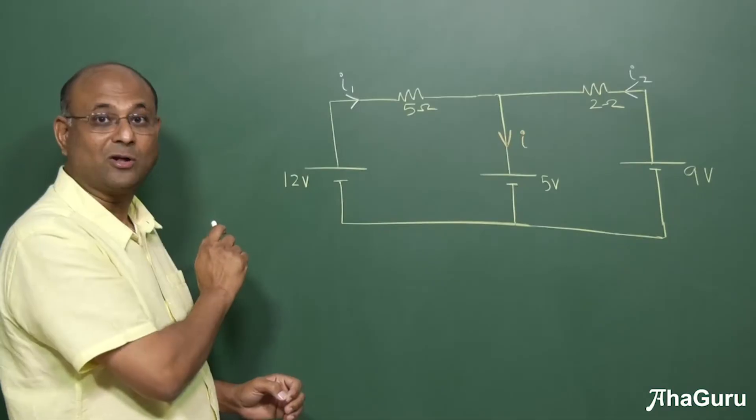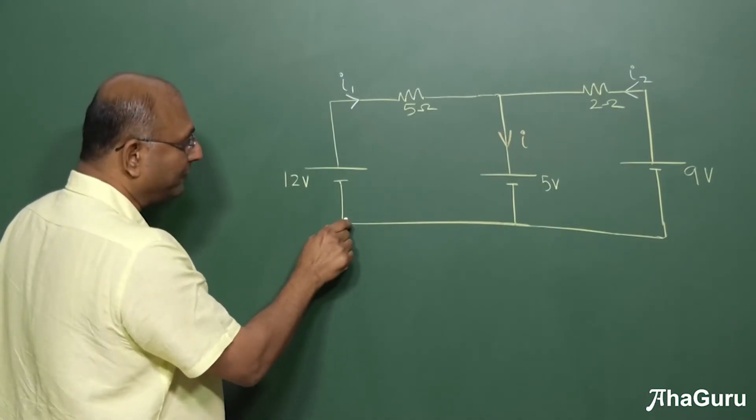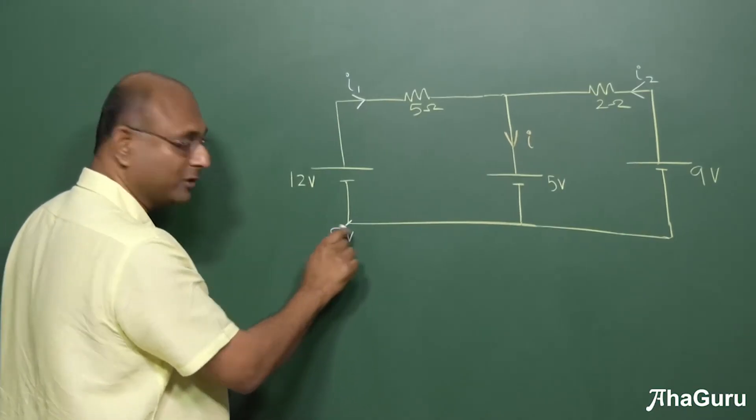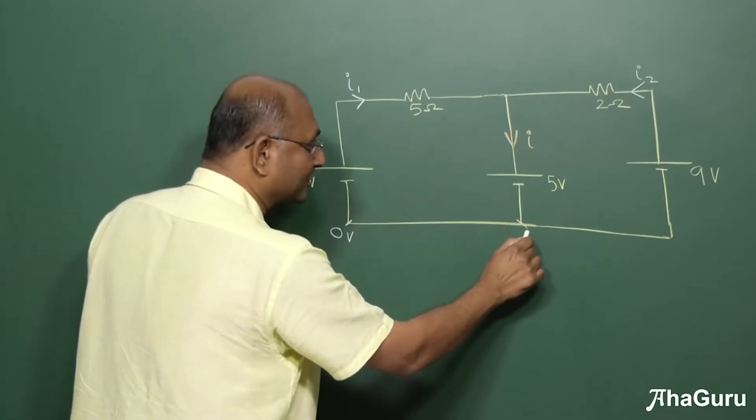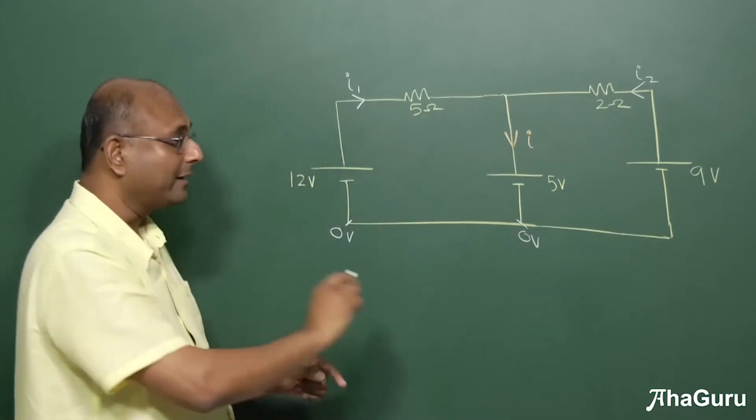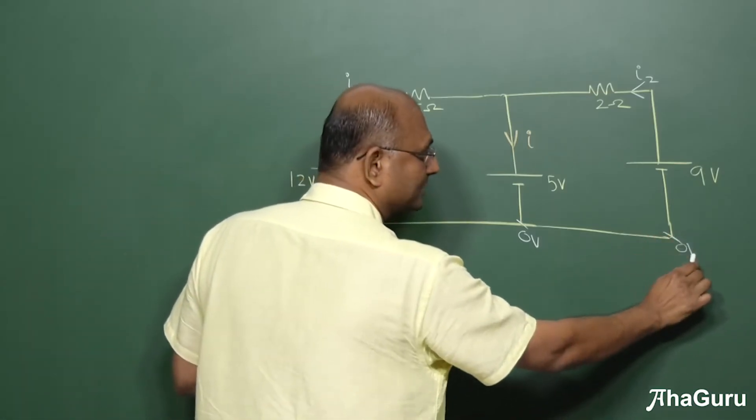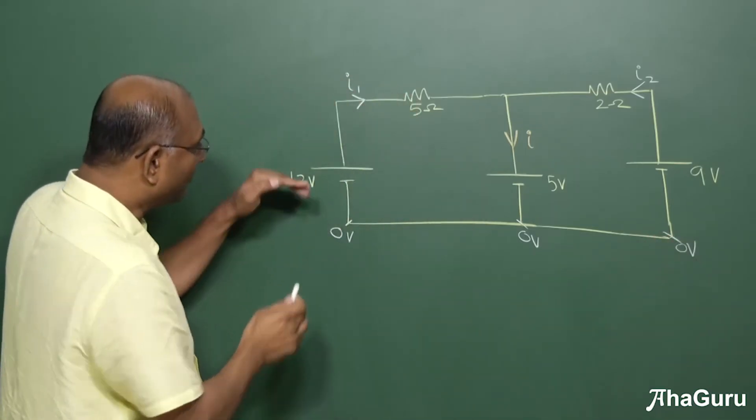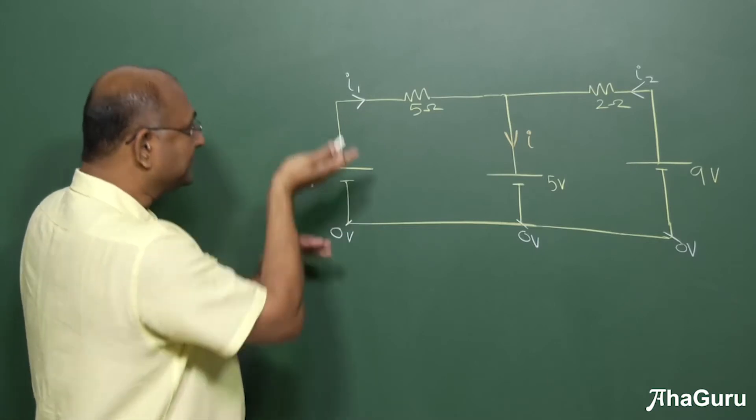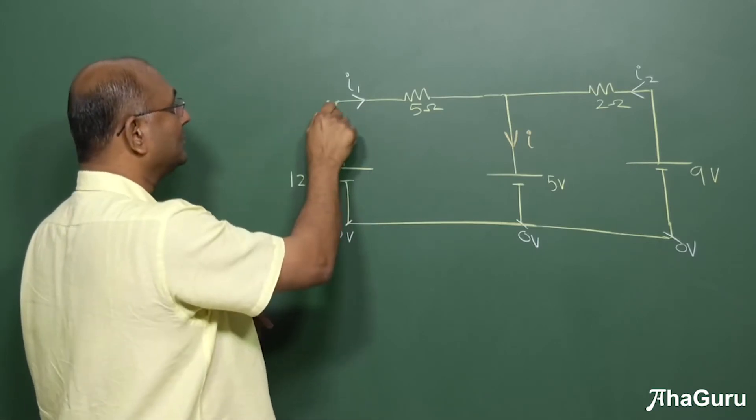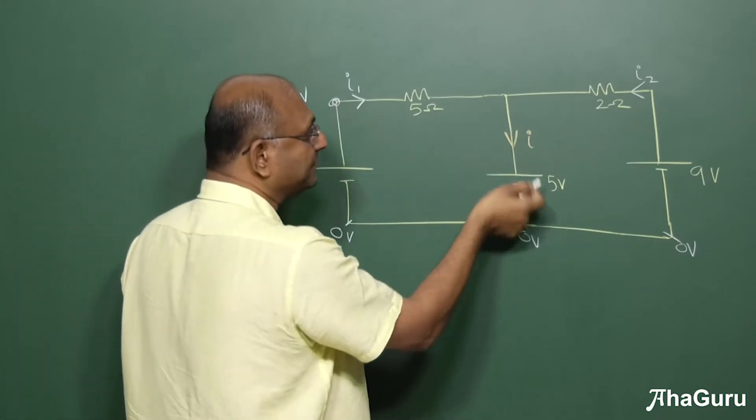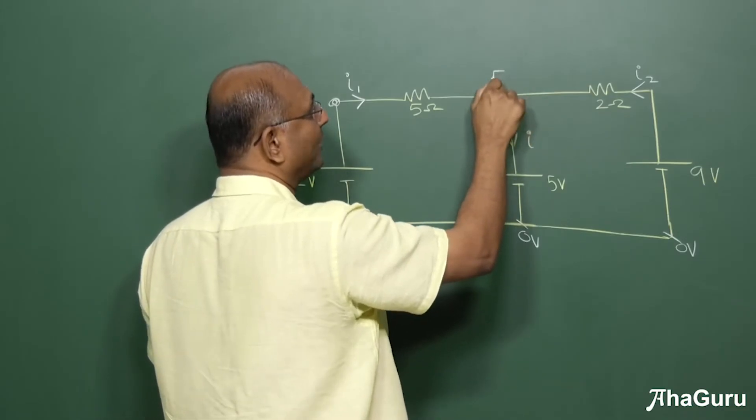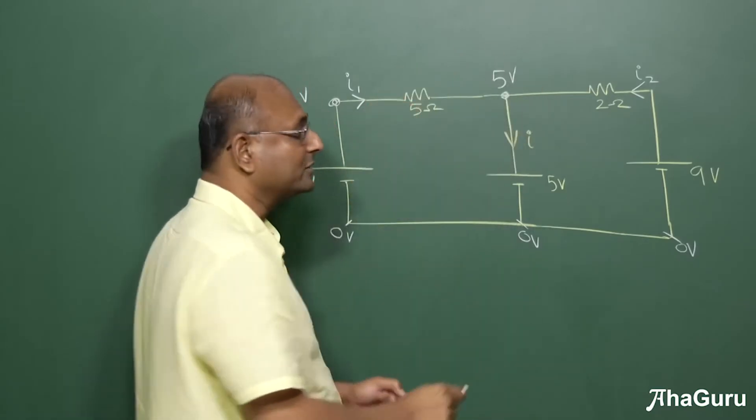Here is a shortcut that I call the zero potential method. If you assume this point is 0 volts, you can assume any point is 0, then this point is also 0 volts because it's connected by a wire. That point is also 0 volts. If this is 0 volts, that's a battery, so that lifts the potential up by 12. So this point has potential 12 volts. This is 0. This lifts it by 5 volts. So this point has potential 5 volts.